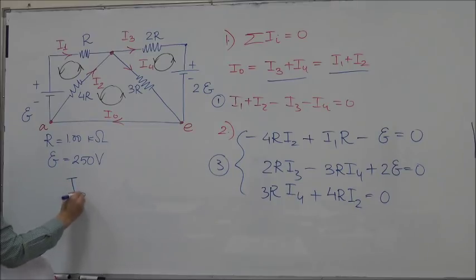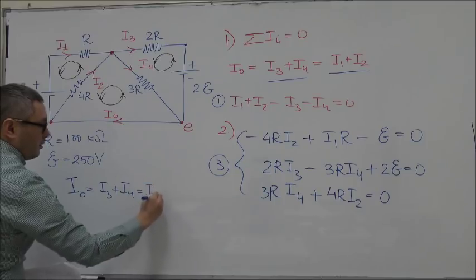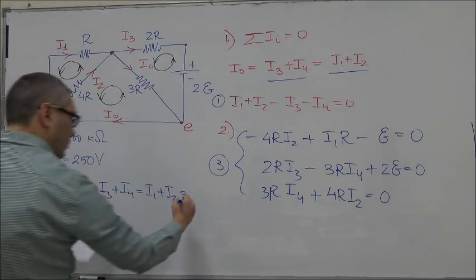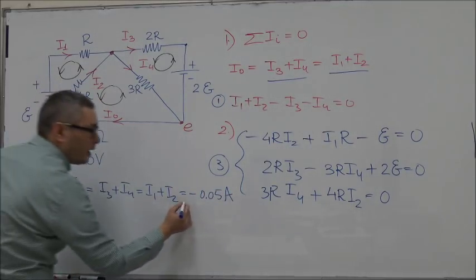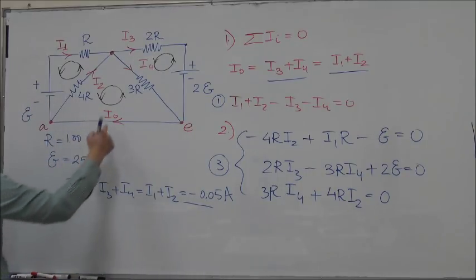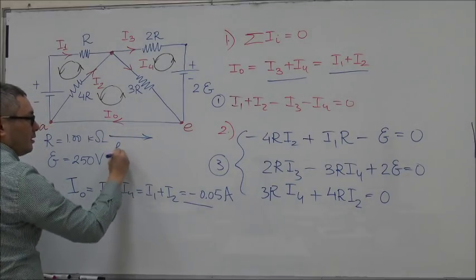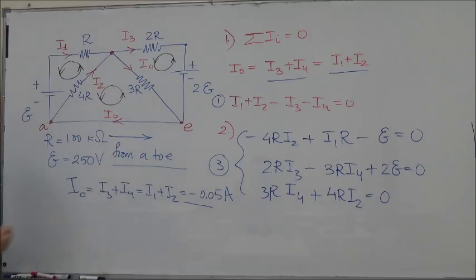This sum turns out to be equal to minus 0.05 ampere. The fact that we got minus means that the actual direction of the current is opposite to the one we've chosen, so the actual direction is from A to E. That is the actual direction of the current and the magnitude of the current is 0.05 amperes.